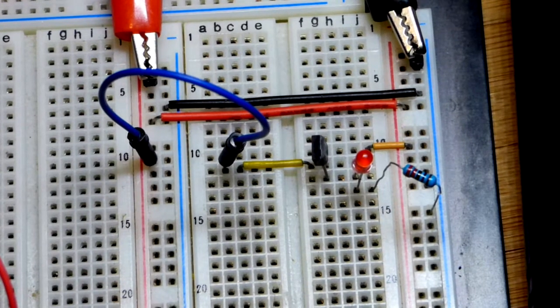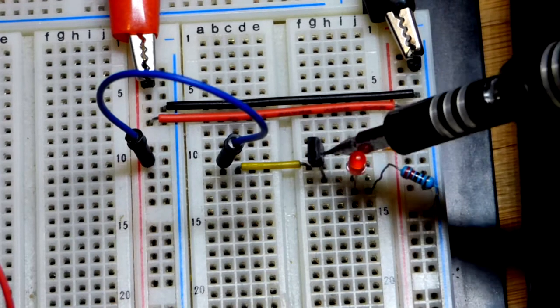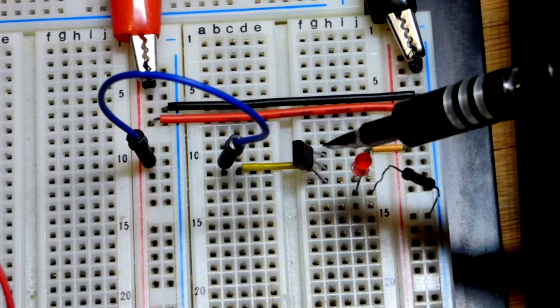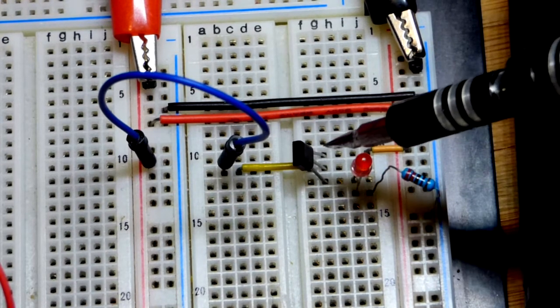In an earlier video we had an N-channel enhancement mode MOSFET wired as a switch. Here we got a P-channel enhancement mode MOSFET wired as a switch. One thing you'll notice is the polarities are opposite.